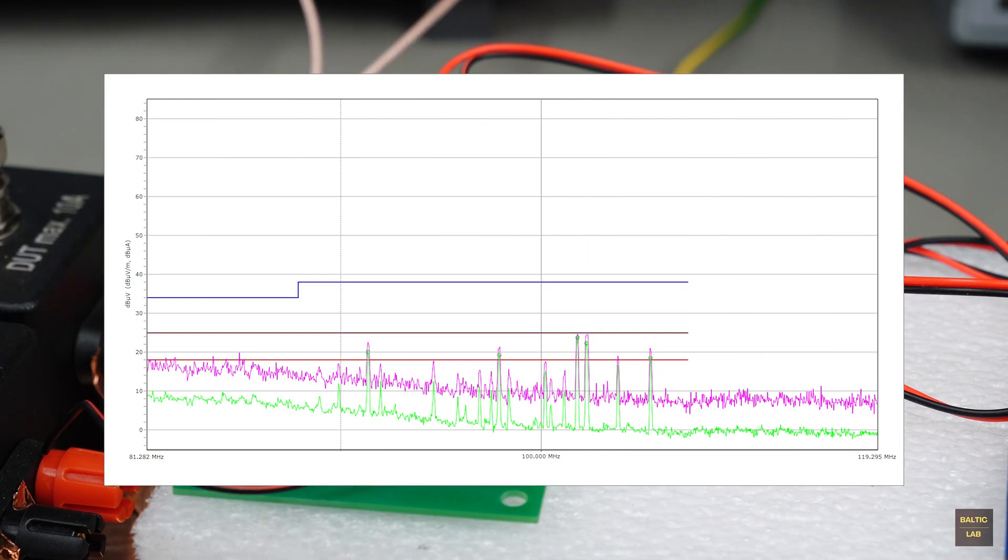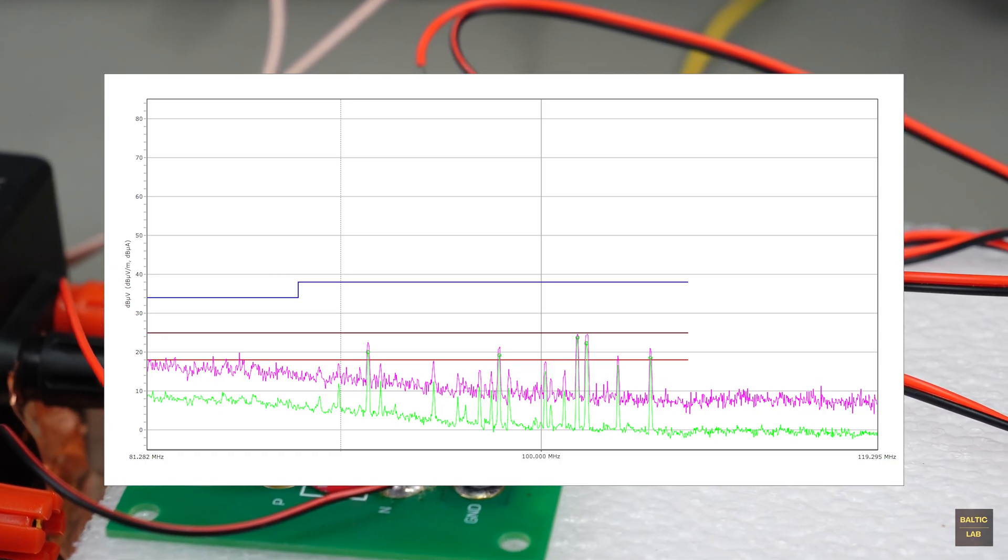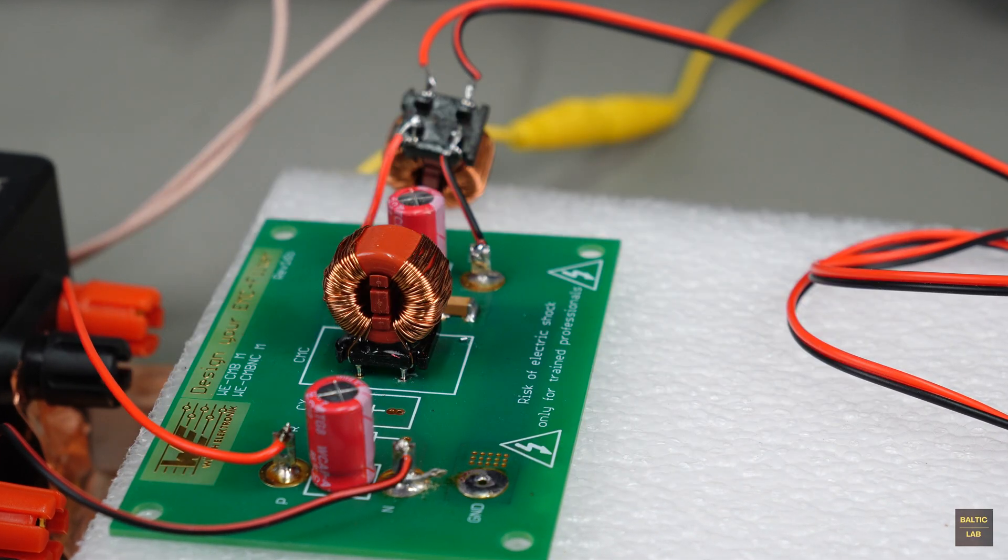Here is a zoomed-in image of the measurement in the FM broadcast band. The remaining peaks correspond to local FM radio stations, which couple into the setup due to lack of shielding. But the converter, of course, is not to blame for that.